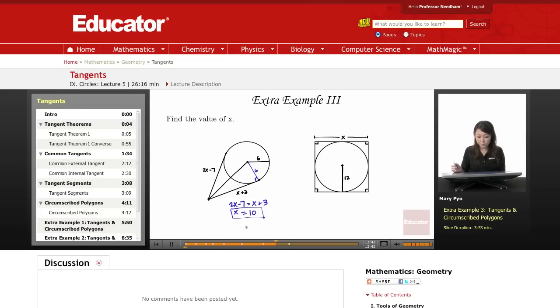And then for this one, the radius is 12. They're asking for this whole side of the square. We know it's a square because all sides are perpendicular, and each side is tangent to the circle, so it has to be a square.